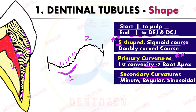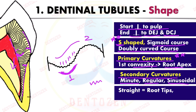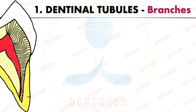These small secondary curvatures are minute, regular, sinusoidal curvatures present throughout the dentinal tubules. As these dentinal tubules reach the root tips, ridges, and cusps, they become straight — so in these regions they are straight.